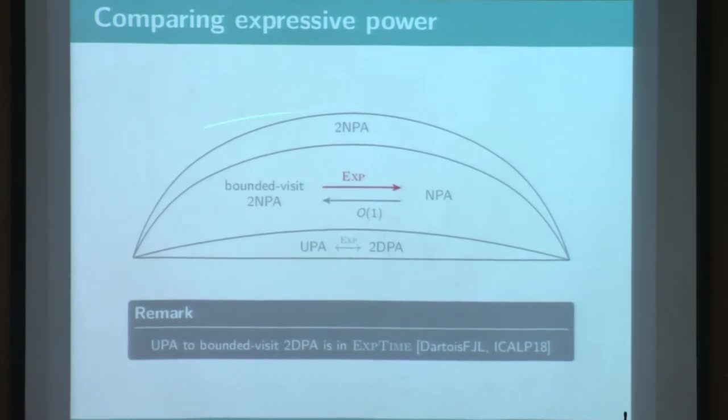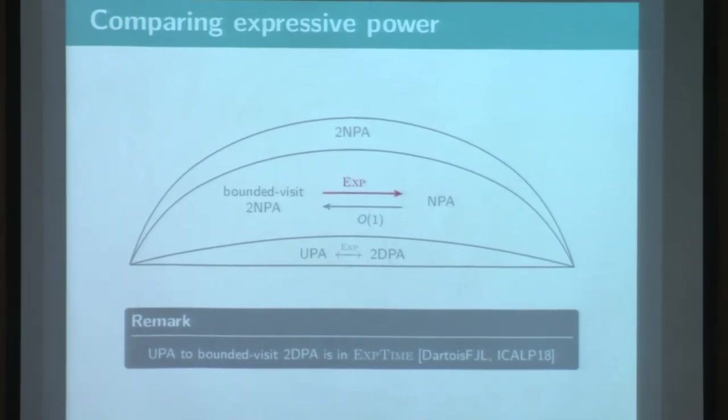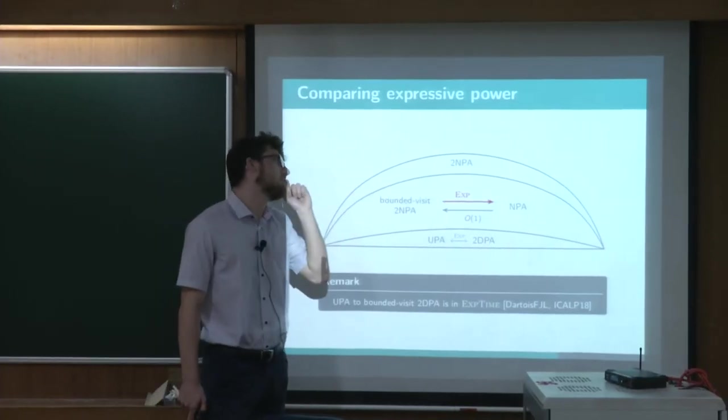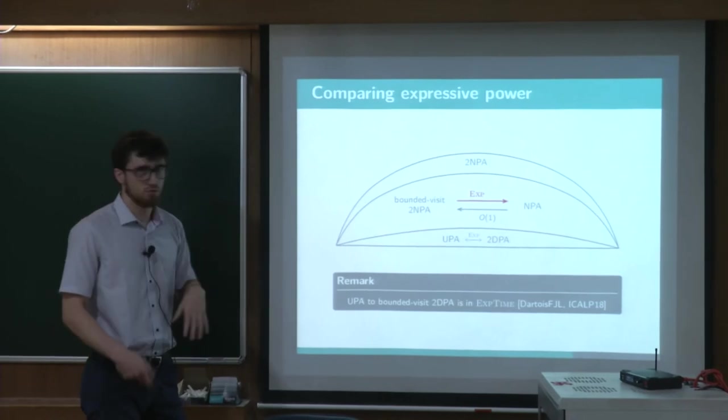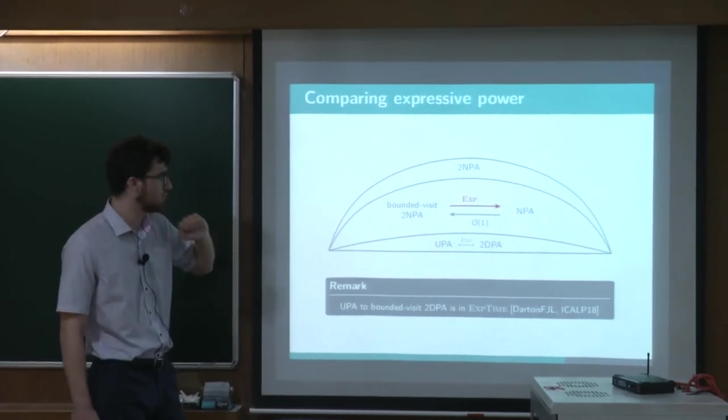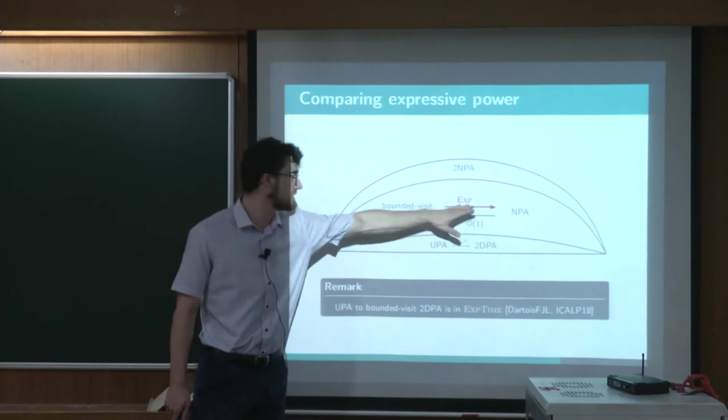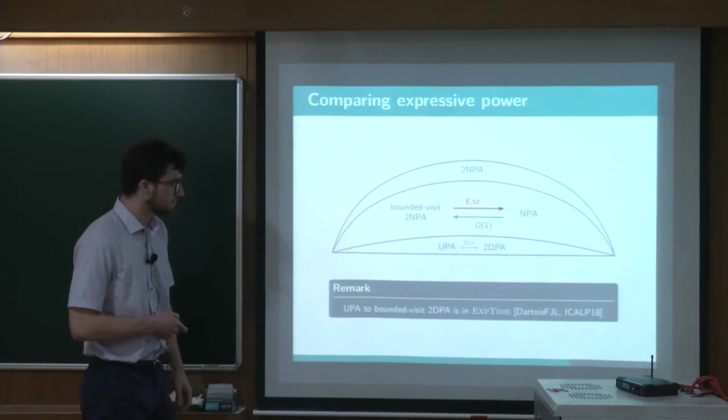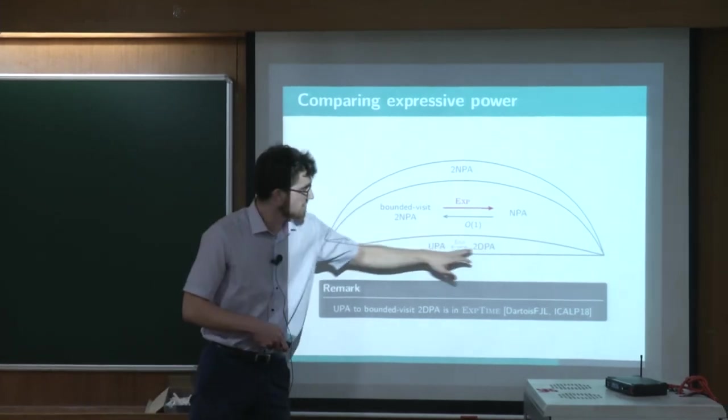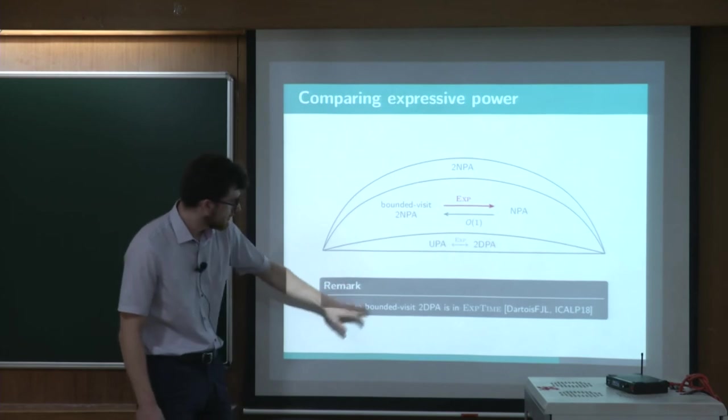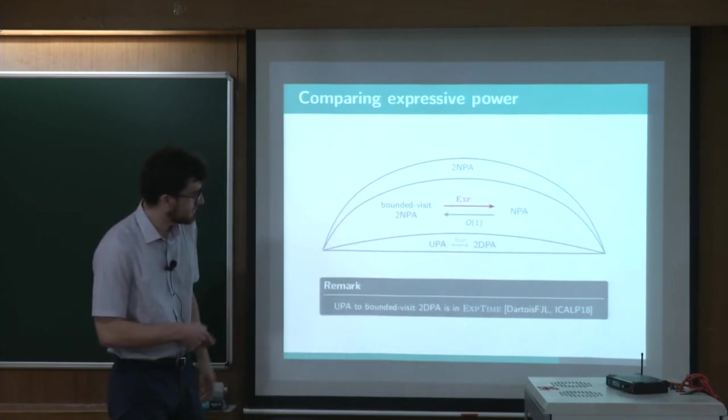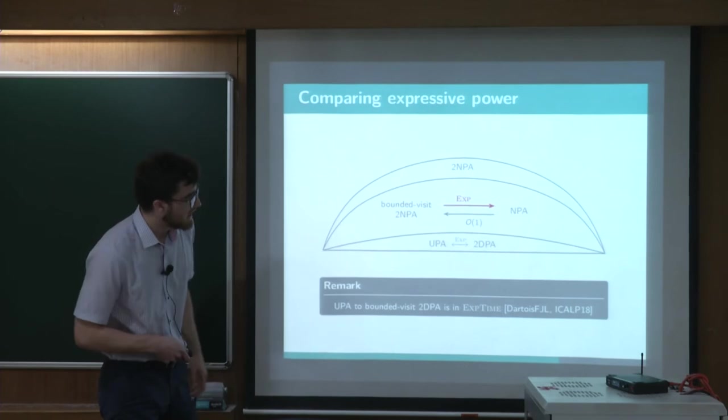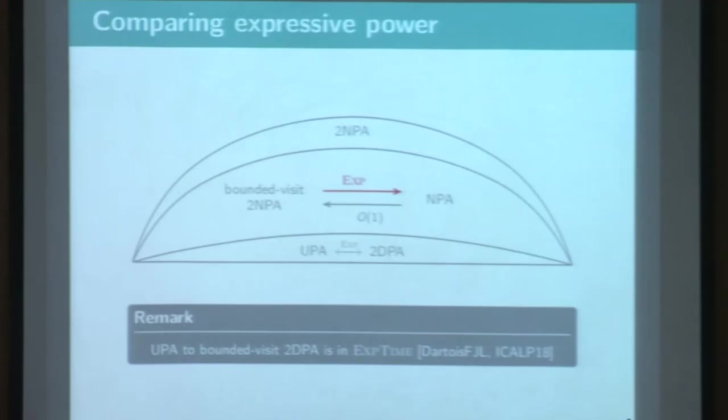So this is a small recap of what I have. So on top of this hierarchy, we have those undecidable class for non-emptiness, the two-way. We just show this direction from bounded visit to one-way Parikh automaton, and also this direction from two-way to unambiguous. Thanks to those exponential time constructions from Dartois, Fournier, Jekker, and Lut, we have those in exponential time. Okay?